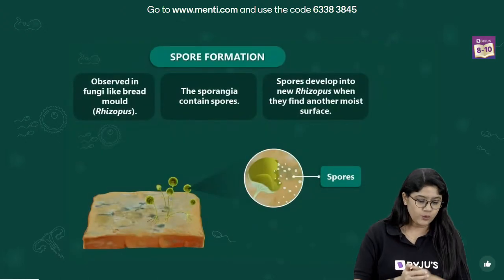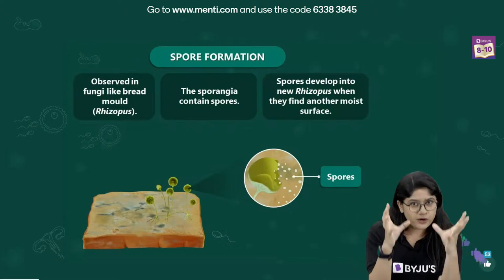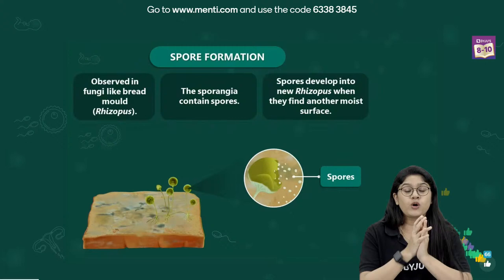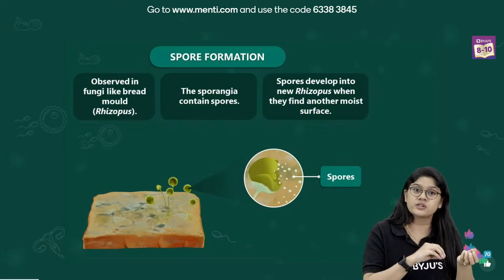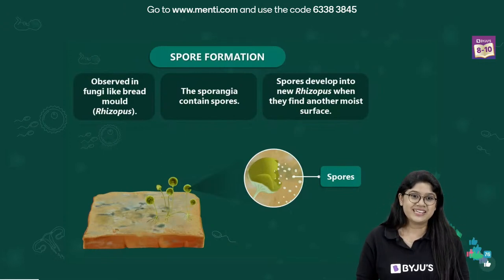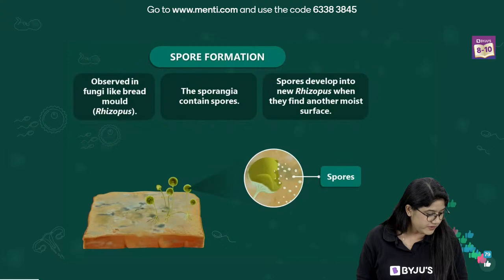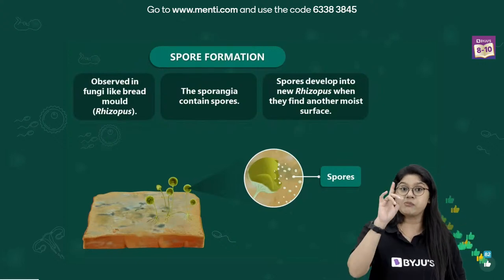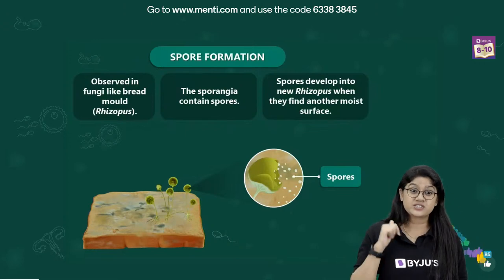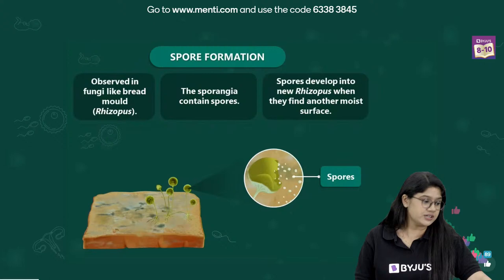Sporangia releases spores. We usually see spore formation in fungi — the example here is Rhizopus. In the sporangia, there's a sac-like structure containing spores. Once the sporangia busts open under favorable conditions, the spores drop on a moist surface and are able to grow and develop. Remember the example: spore formation is seen in Rhizopus.